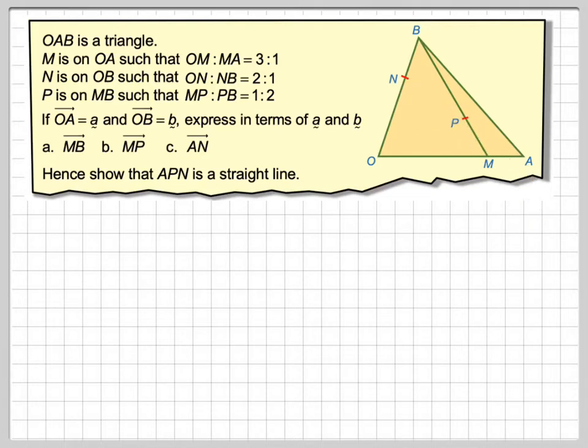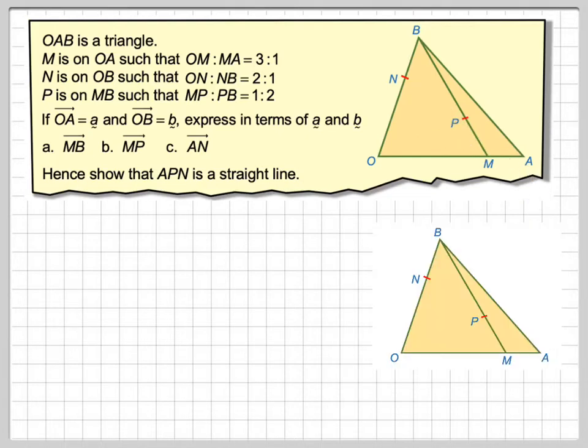If we take the diagram and start annotating it, you should in the exam annotate it with a pencil. So this, we are told, is the ratio of 3 to 1; this, we are told, is the ratio of 2 to 1; and this is the ratio of 1 to 2. It's important you get the ratios round the right way. OA is a, and OB is b.